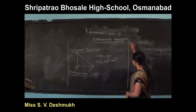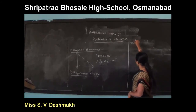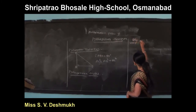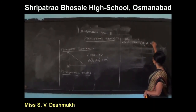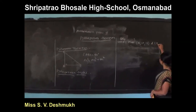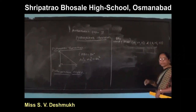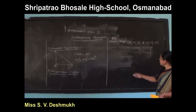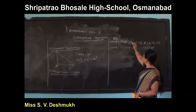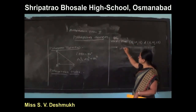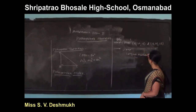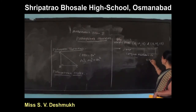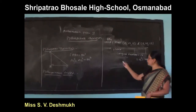For example, verify that 5, 12, 13 and 8, 15, 17 are Pythagorean triplets. In the triplet 5, 12, 13, the largest number is 13, and 13 squared is equal to 169. This is equation one.